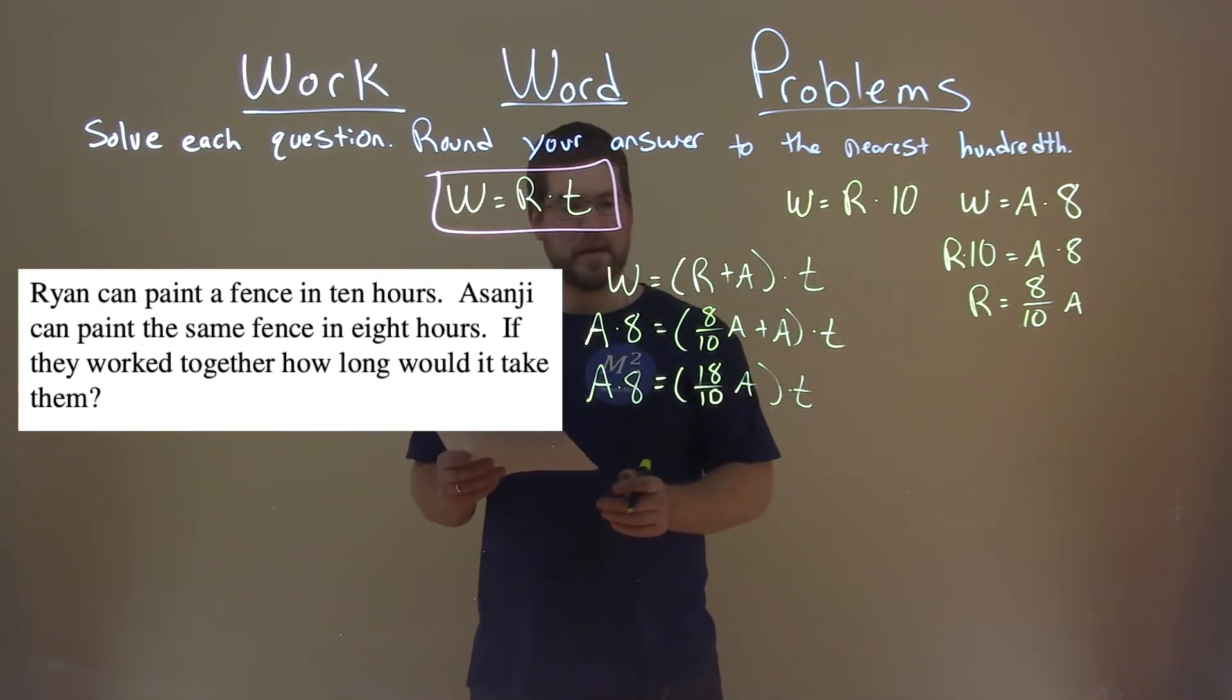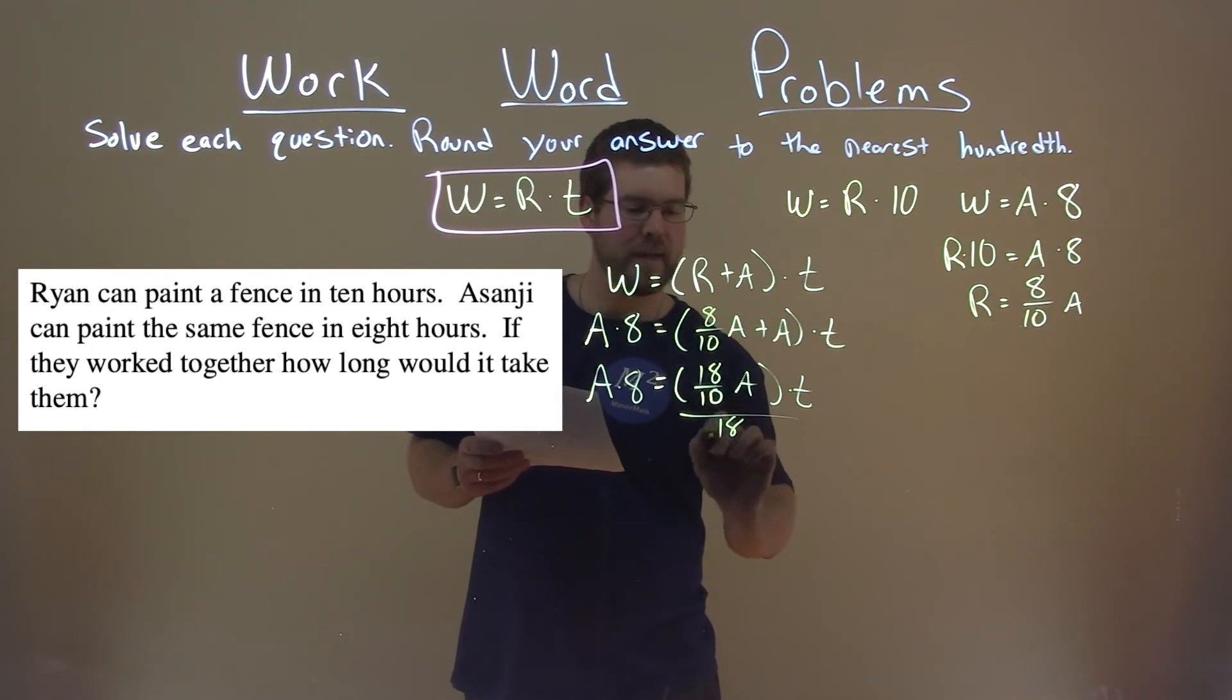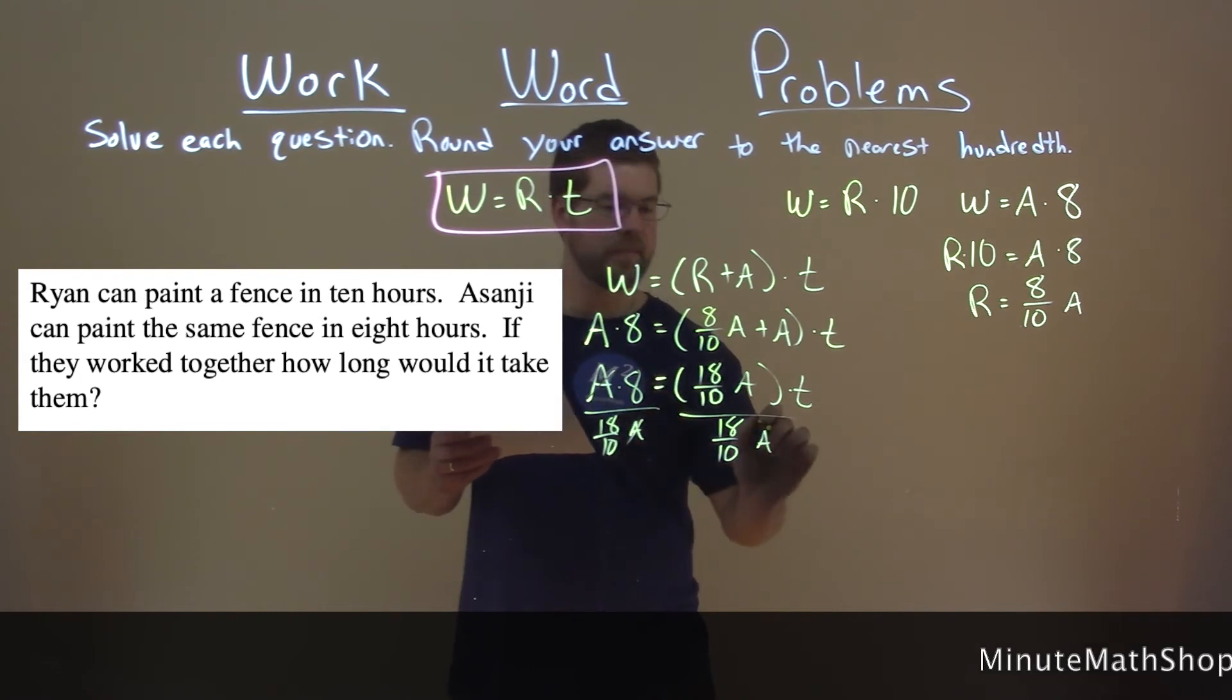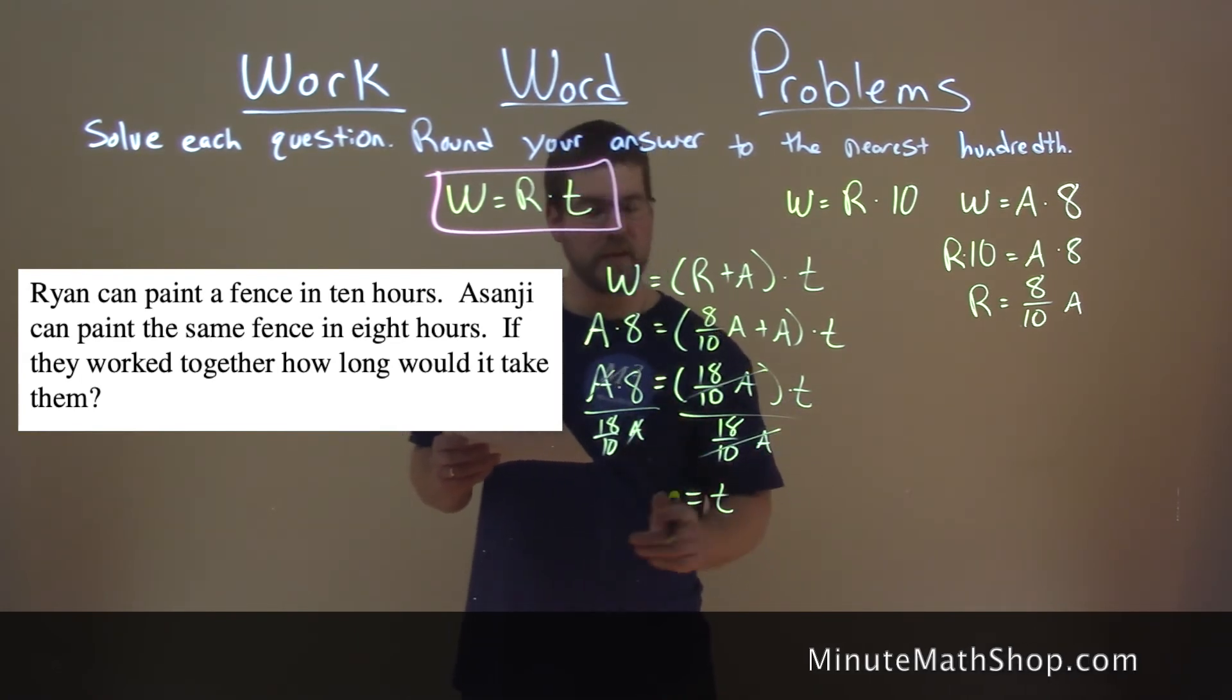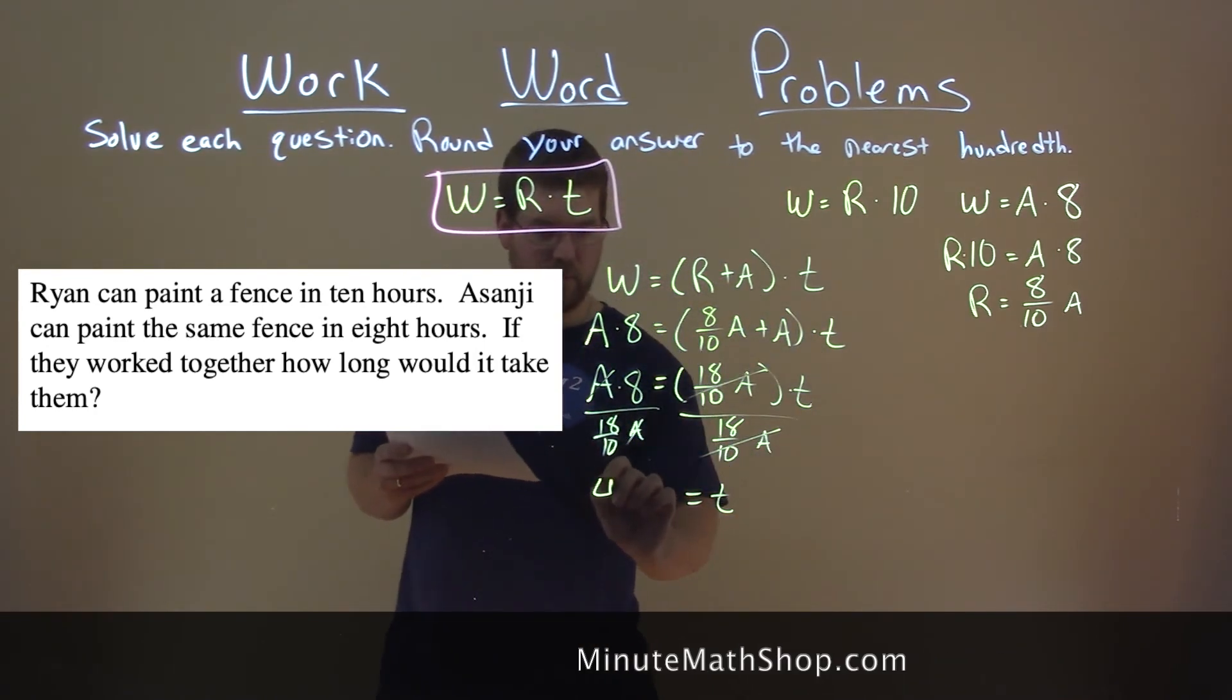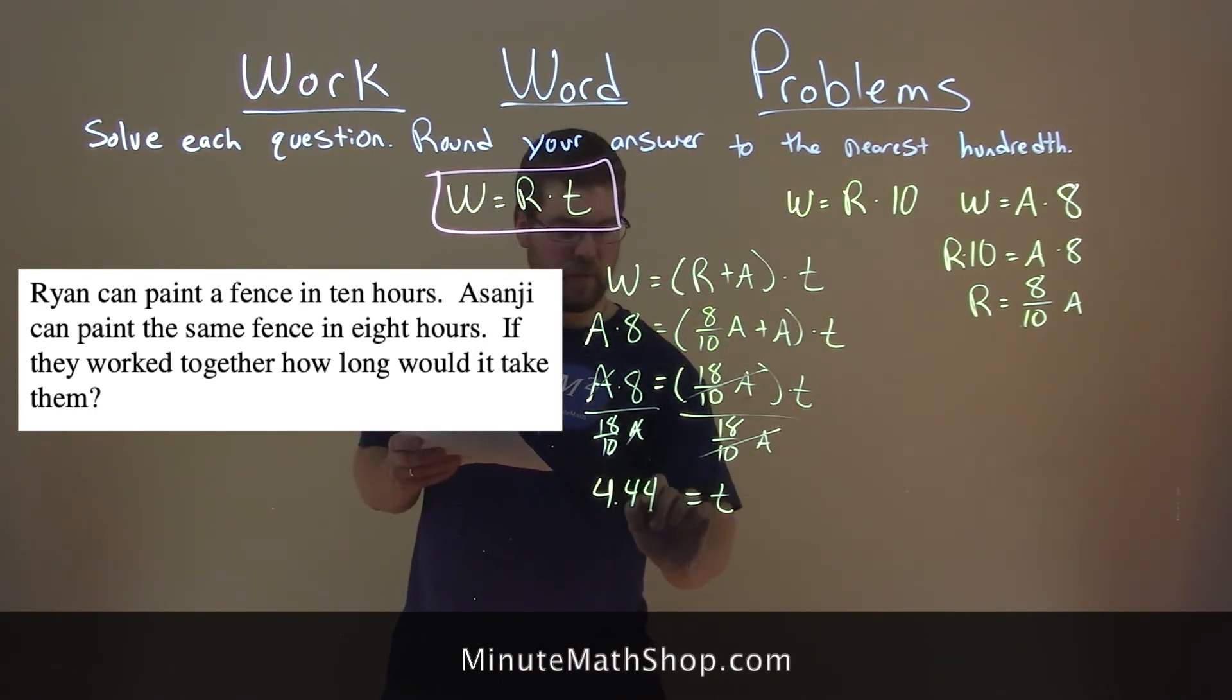Then, we want to get T by itself. Divide both sides by 18 over 10 A. The A's cancel, the sides cancel, and we're left with T by itself. And 8 divided by 18 over 10 is 4.44 hours.